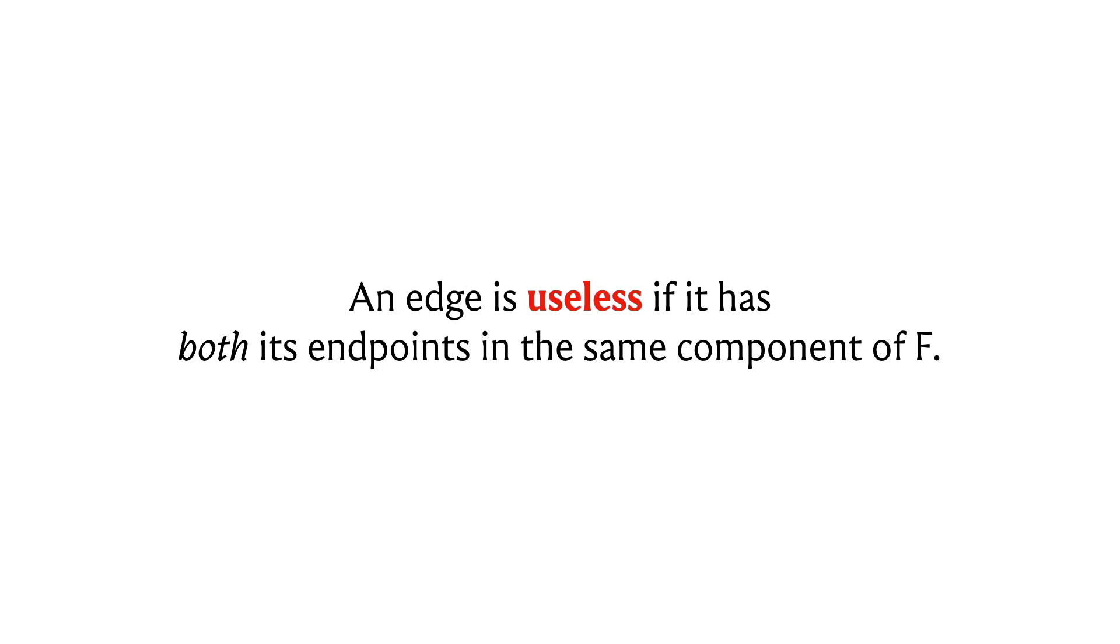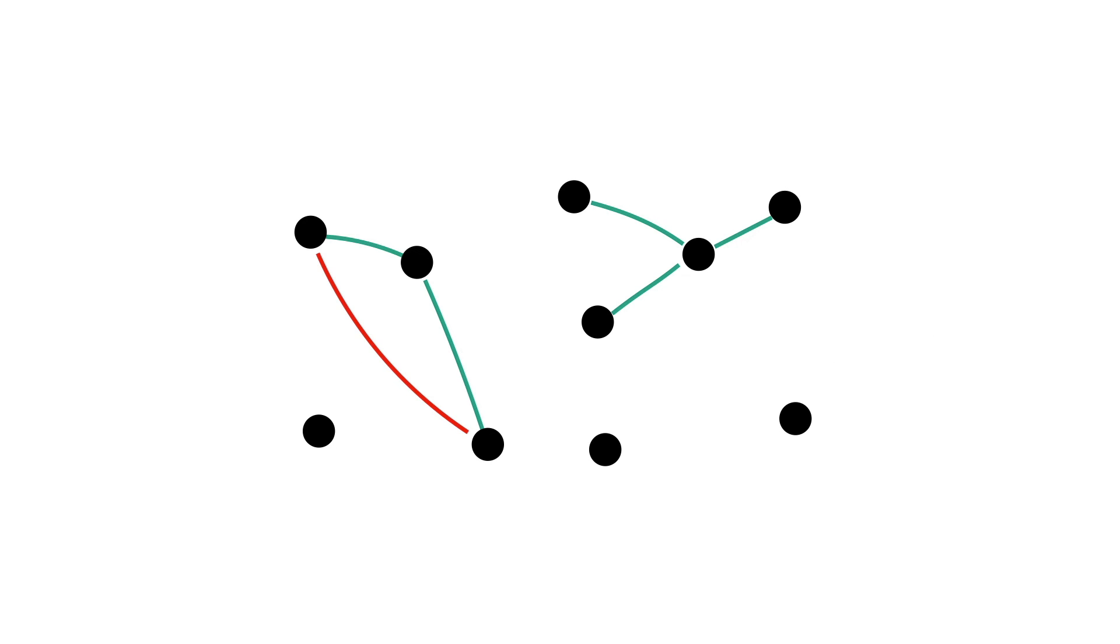So first, when you do have a spanning forest, let's classify the edges into a couple of useful categories. The first one is the category of useless edges. These are edges that have both of their endpoints in the same tree of the spanning forest. Notice that such edges will induce cycles, and therefore we are never going to add them to our solution if we are committed to extending the solution that we have built up so far. So the nomenclature of calling such edges useless is actually quite appropriate.